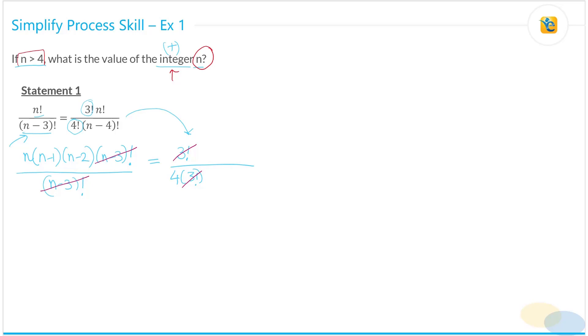Now observe that here you have n factorial and you have n minus 4 factorial. So what you can do is write down n factorial as n into n minus 1 into n minus 2 into n minus 3 into n minus 4 factorial. And in the denominator, you just write n minus 4 factorial and you can then cancel this out.